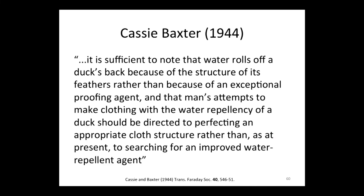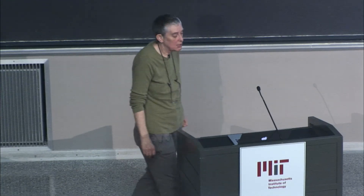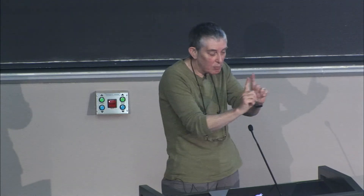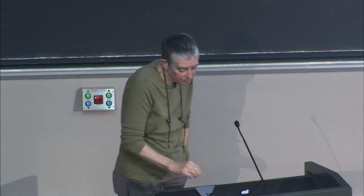Cassie and Baxter have a lovely quote in their paper: 'It is sufficient to note that water rolls off a duck's back because of the structure of its feathers, rather than because of an exceptional proofing agent. And that man's attempt to make clothing with the water repellency of a duck should be directed to perfecting an appropriate cloth structure rather than searching for an improved water repellent agent.' Today's a rainy day — if you wore your Gore-Tex coat, many Gore-Tex type fabrics have a durable water repellent coating based on an array of little pillars, and the analysis of that water repellency is based on the same Cassie-Baxter calculation. People have engineered materials using this analysis to develop water repellent fabrics for clothing.